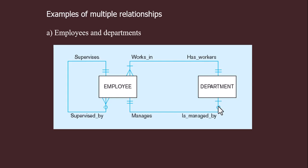It is not necessary that all employees manage departments — so this is a mandatory-optional one cardinality constraint. Similarly, a department is managed by only one employee, so this is mandatory. This means all departments must have a boss, or it must be managed by some employee, but a maximum of one employee should manage it.